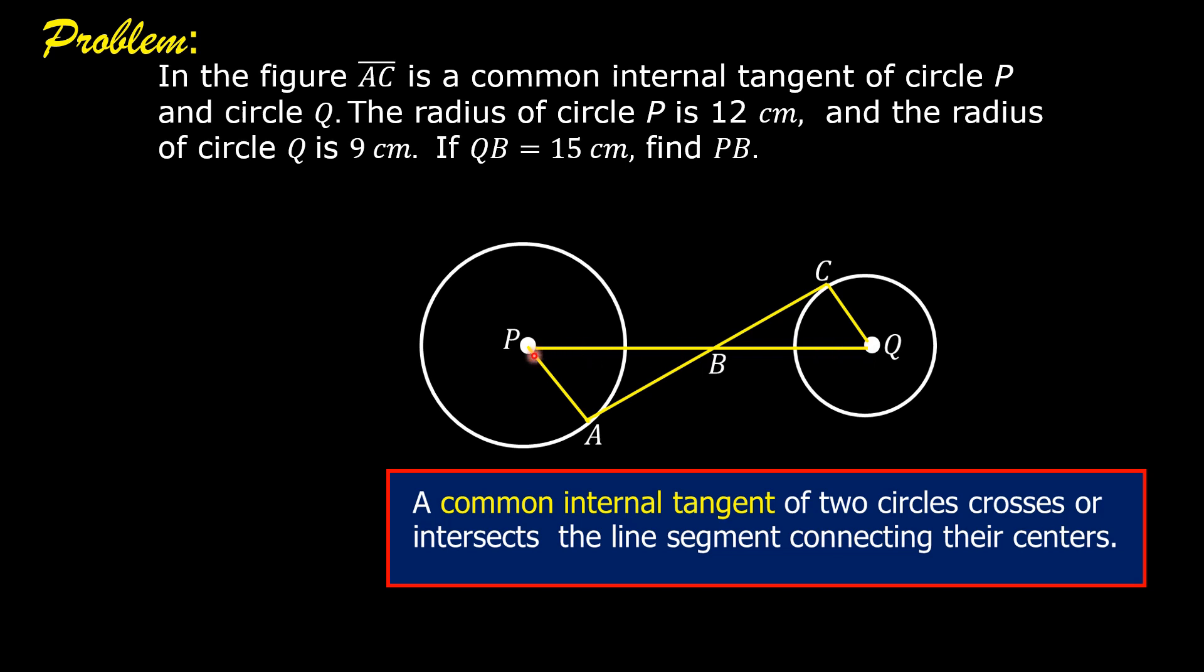P of circle P and the center Q of circle Q. When we say circle P, we mean the circle with center P, and when we say circle Q, we mean the circle with center Q. The other given data are the radius of circle P, which is equal to 12 cm, and then the radius of circle Q, which is 9 cm. And then the length of QB, which is 15 cm.